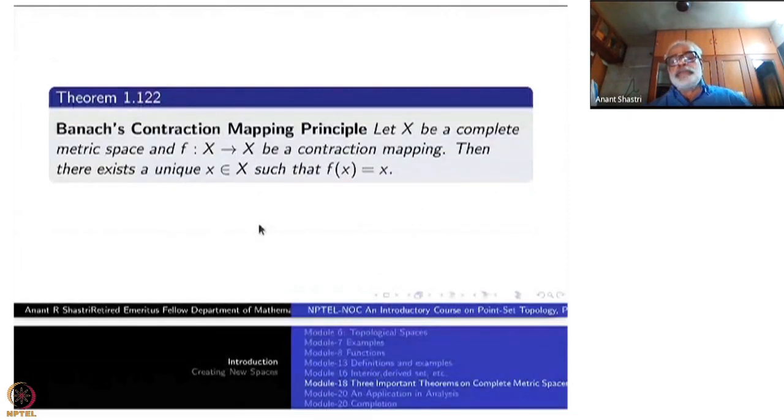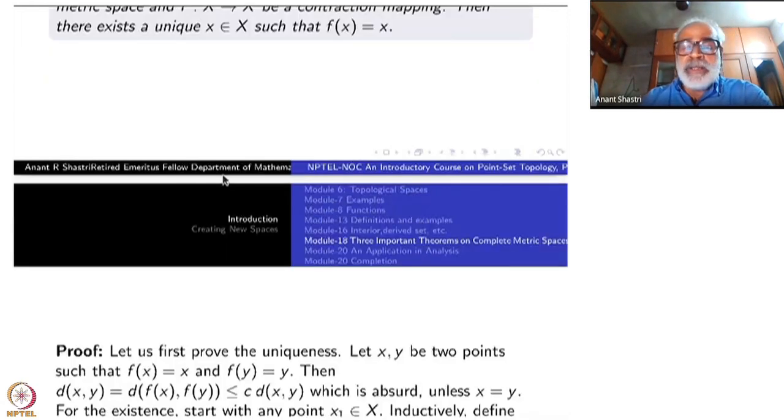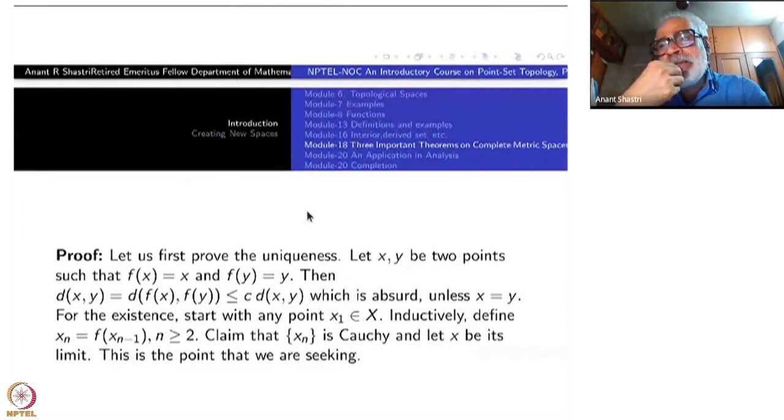So the theorem says that if X is a complete metric space and you have a contraction mapping f from X to X, then f fixes a point. Fixes a point means there is some x such that f(x) equal to x. Moreover, such an x is unique. So then there exists a unique x belonging to X such that f(x) equal to x. That is the statement.